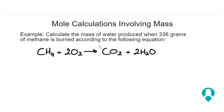Calculate the mass of water produced when 336 grams of methane is burned according to the following equation. We have methane plus oxygen gives us carbon dioxide and water. This equation is balanced.